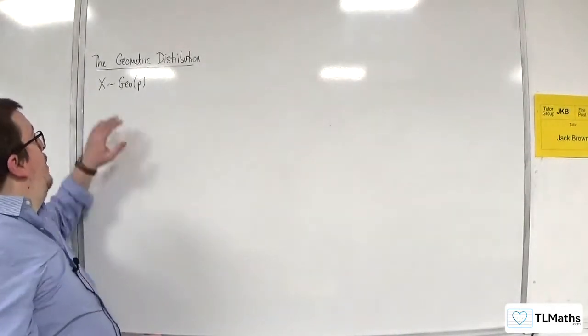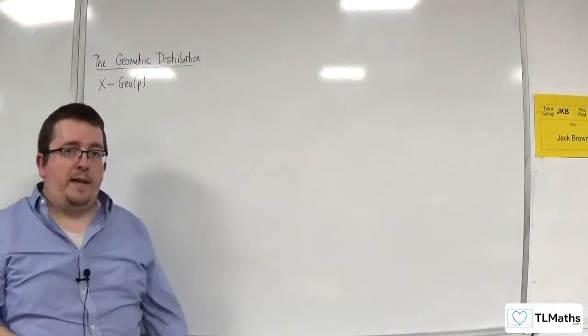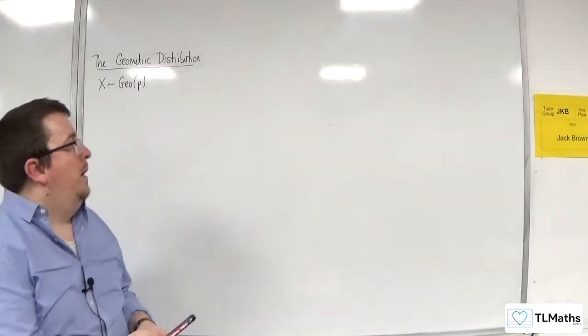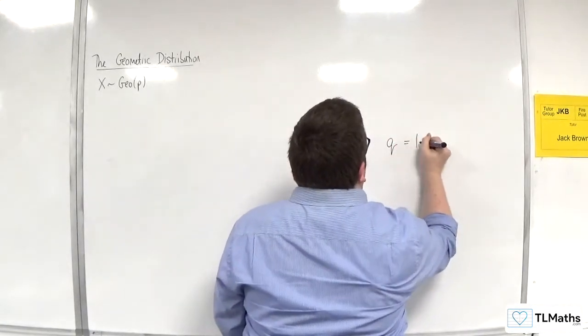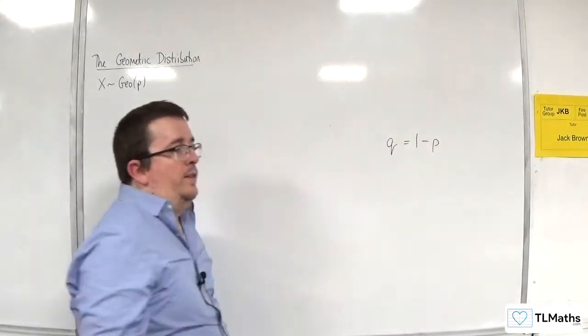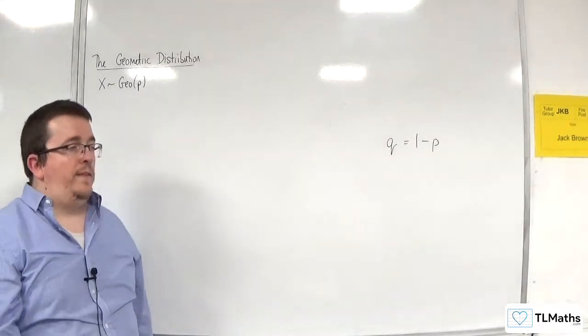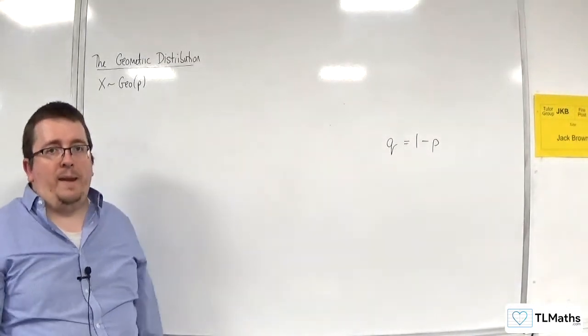So, we've got X is a geometric distribution with probability p. Now, in the previous video, I explained that quite often you'll see q as 1 minus p. And that's how it's written in the formula booklet. And I'm going to use that notation in this video just to make things a little bit easier.